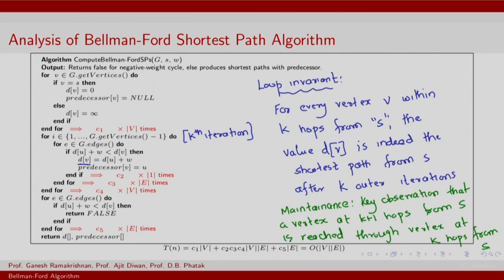Regarding time complexity, the runtime is straightforward: we iterate over all edges for each outer iteration, and the number of outer iterations is the number of vertices. This gives a complexity of number of edges times number of vertices. The final check for negative weight cycles is only order of number of edges. So the overall complexity is O(V * E), where V*E is the dominating term. Thank you.